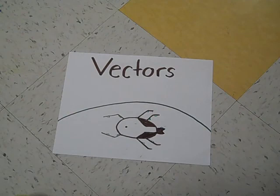A vector is a disease spread by an animal or organism that transmits the infection or the disease. Some vectors include ticks, mosquitoes, and fleas. An example of a vector spread disease is Lyme disease.